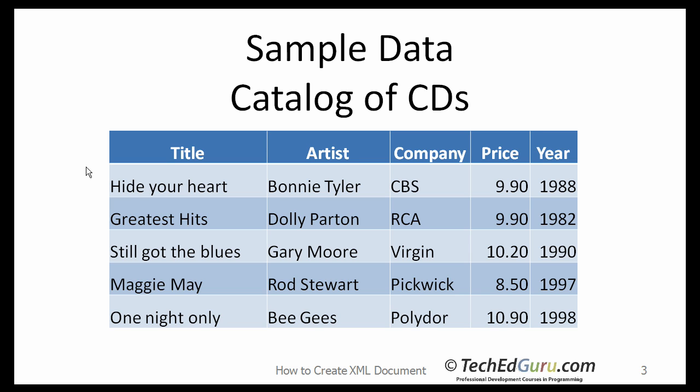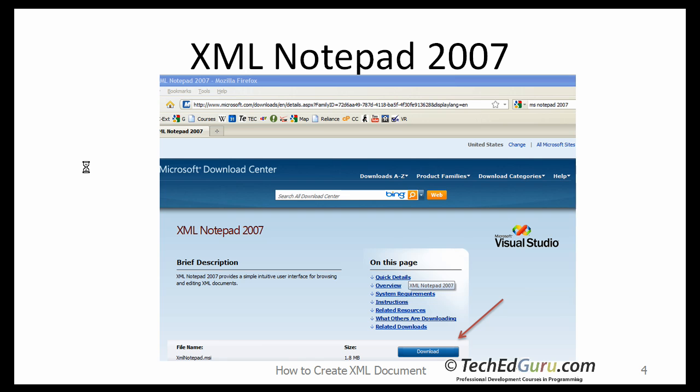Simply search for MS Notepad 2007 and download the software. After downloading, simply run the installation program. When ready, double click on the shortcut and run the program, and I will walk you through this example.